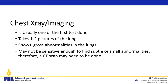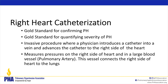The chest X-ray is usually one of the first tests done — along with blood work and an EKG. It takes one or two pictures of the lungs, is very simple, and shows gross abnormalities. However, it may not be sensitive enough to find subtle or small abnormalities — that's why we also do a VQ scan, echocardiogram, and sometimes a CT scan to capture smaller findings.